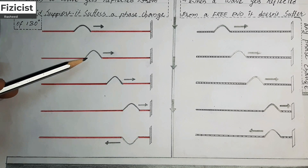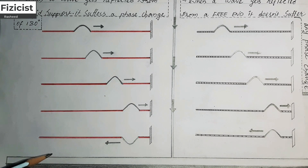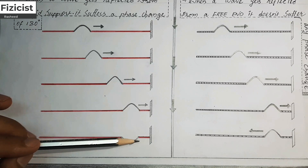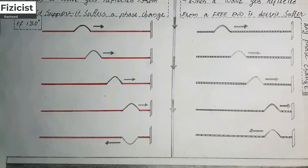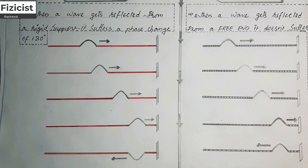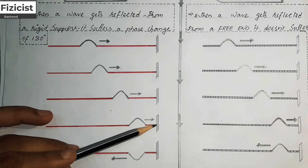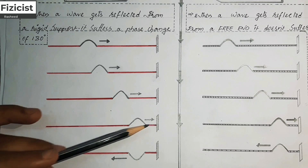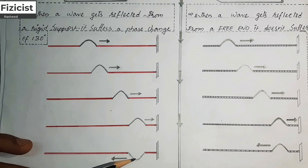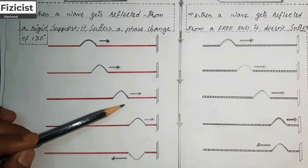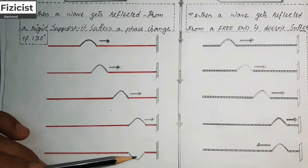Here is our pulse continuously travelling towards the fixed end — situation 1, 2, 3, 4 — and when it strikes the fixed end, it gets reflected and travels in the opposite direction. In the case of reflection from a fixed end, we can observe an important fact: when the wave pulse reaches the rigid support, it suffers a phase change of 180 degrees. The wave pulse which was in the upper region flips down.